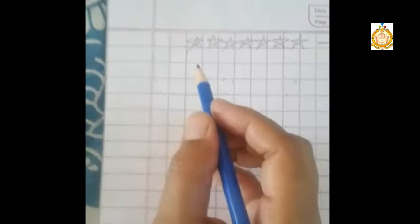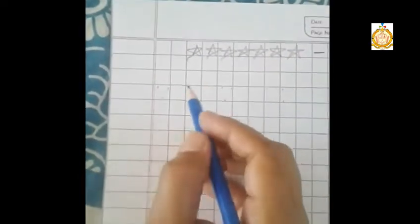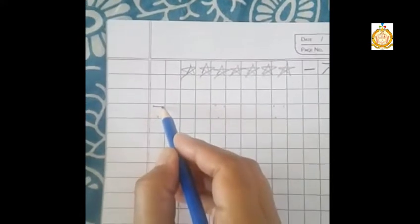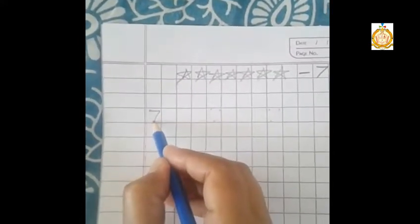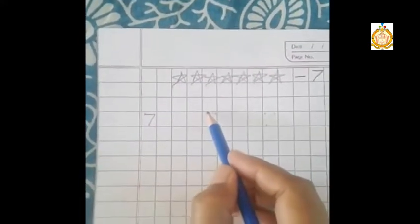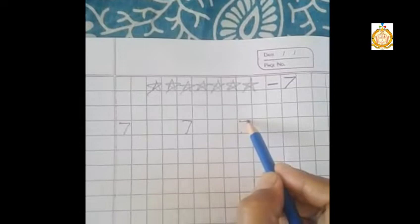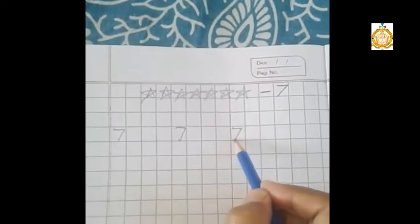And try to join the first 2 dots in sleeping line, next 2 dots in slanting line. Sleeping line, slanting line. Sleeping line and slanting line.